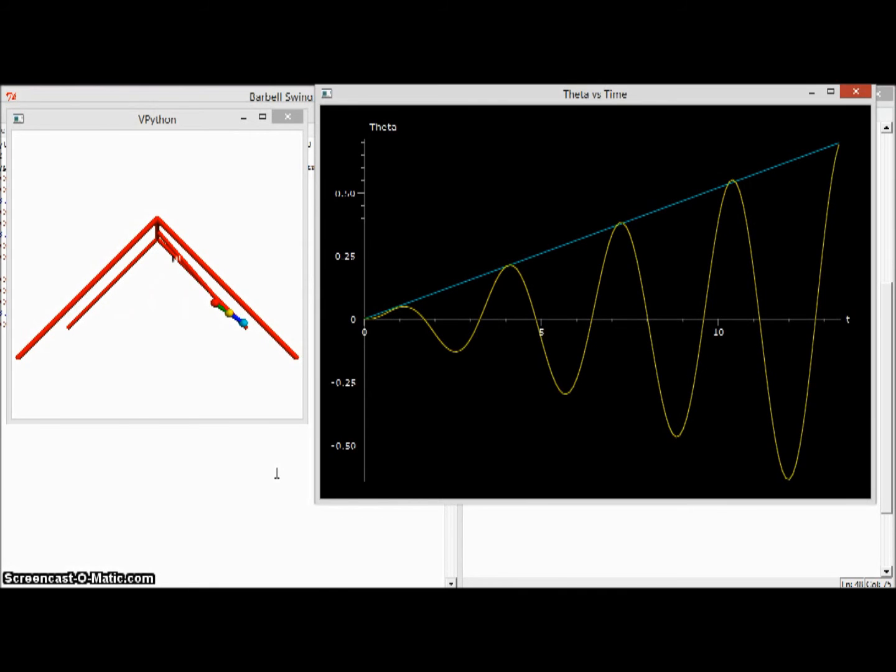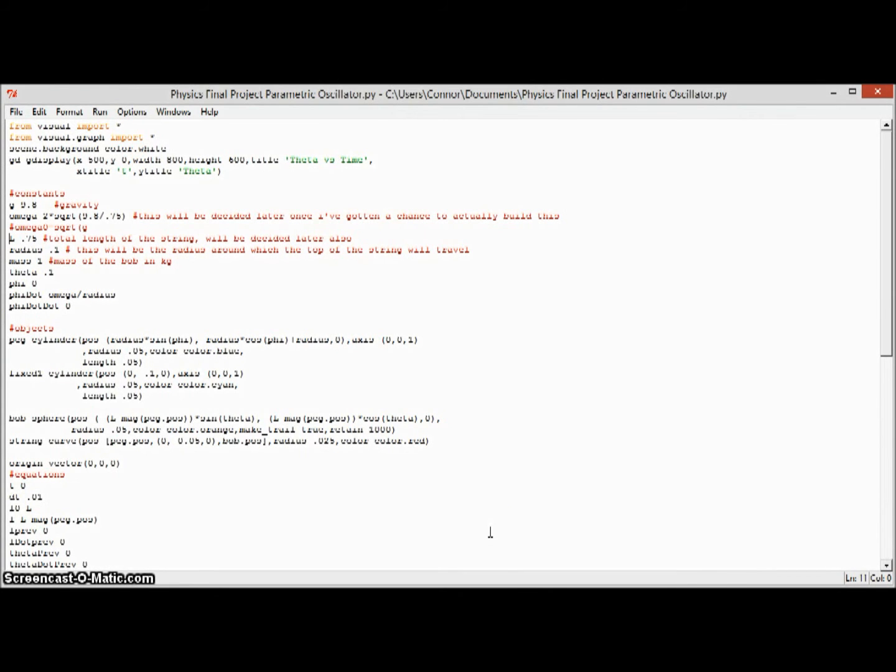This is a VPython simulation of the parametric oscillator. In this parametric oscillator, the distance from the object to the pivot point is what varies. We will be comparing this to the swing.